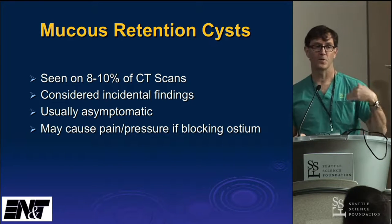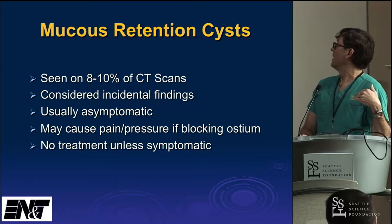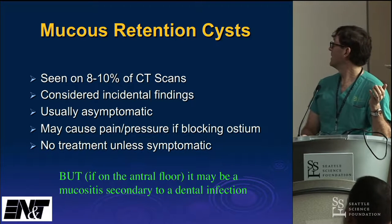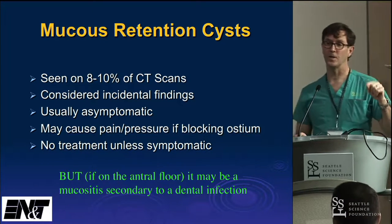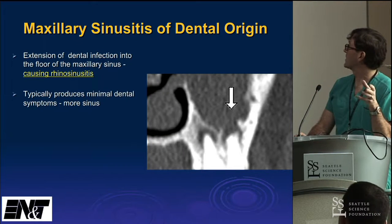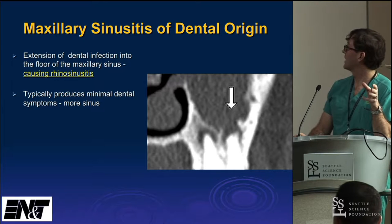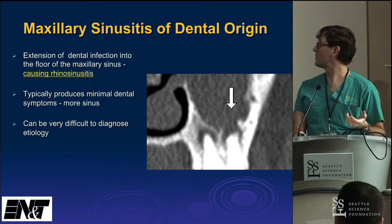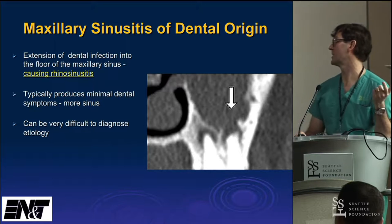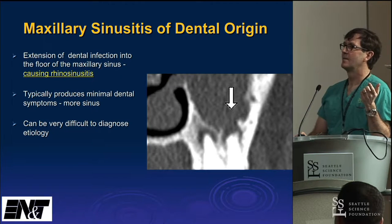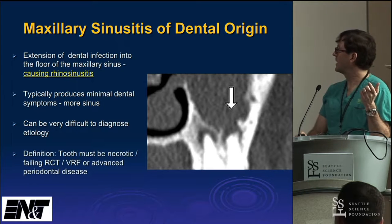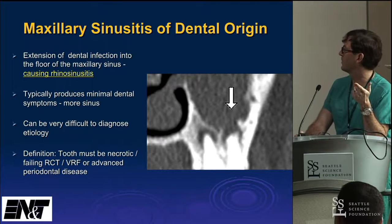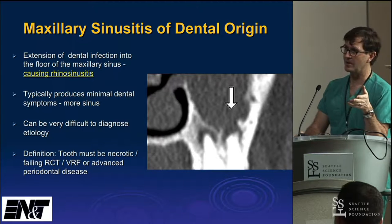However, mucus retention cysts may cause pain or pressure if they block the ostium. If they're not blocking the ostium but are symptomatic, we can discuss whether they need to be removed. The first thing I would do is send the patient to an endodontist, because frequently these are caused by endodontal disease. True maxillary sinusitis of dental etiology is where the dental infection perforates through the floor of the sinus, typically creating minimal dental symptoms but lots of sinus pain, pressure, drainage — and the drainage tends to be very foul. The definition requires the tooth be necrotic, have a failed root canal, a vertical root fracture, or advanced periodontal disease.